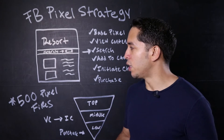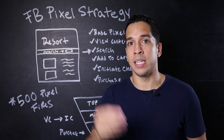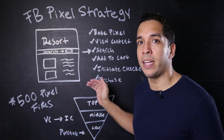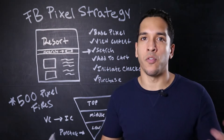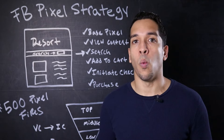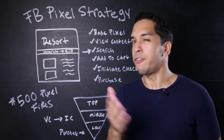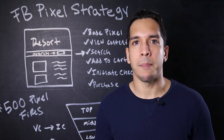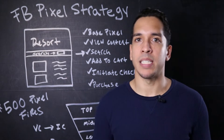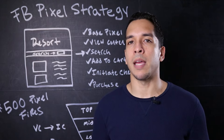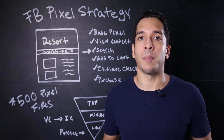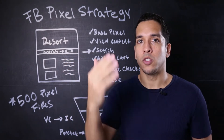One thing you might not have known is that when you launch a brand new website, or once you put the pixel on the website and it starts collecting data, you need to get 500 pixel fires for whichever event for Facebook to be able to optimize at its full capability. This does not include the 25 to 50 conversions that you need to get at an ad set level once you create your campaign. If you have a brand new website, you can optimize your initial Facebook campaigns for website traffic so that you can start getting pixel fires before optimizing for conversions. Depending on your budget, you might want to run your campaigns for at least one to two weeks to get enough volume.